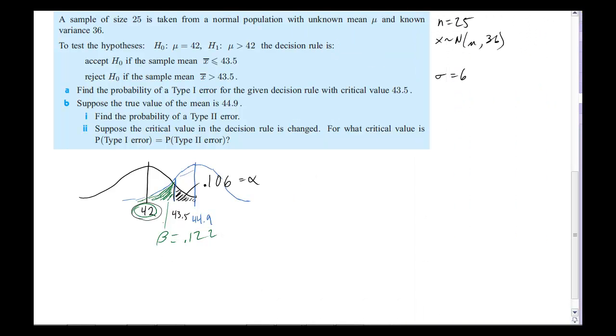Alright, so that's the probability, given the true mean of 44.9, of us having accepted 42 even though it's really not true. Now, you'll notice that these two probabilities are very close to each other. Well, the next question is, suppose the critical value in the decision rule is changed. So we're not using 43.5 anymore. The question says, for what critical value is the probability of Type 1 equal to the probability of Type 2?